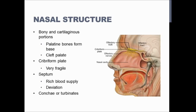Within the nasal cavity, there are ridges called conchae or turbinates — you can see them here in this picture. There are bones underneath some of them, and they help to stir and warm the air as it's coming in to humidify it better so you can breathe more easily, and they filter out some of the pathogens you could be breathing in.